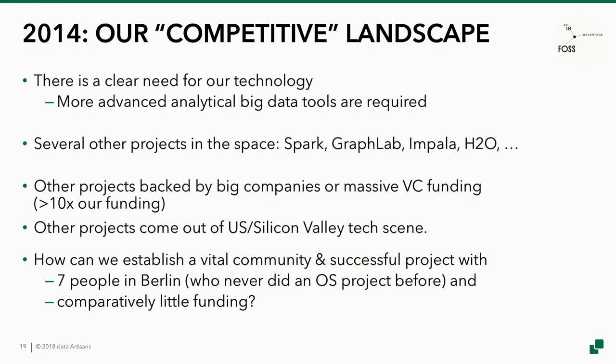So how did we grow a community? Back in 2014, the landscape of projects was kind of competitive — it still is. But we also saw that there was a clear need for the technology that the software was offering — a clear need for advanced big data analytics tools. There were lots of projects around, most prominently Apache Spark, and a couple of others. All of these projects were also backed by some kind of companies, either big companies or startups, with a lot more funding than we had. We were here in Berlin, where money is not as freely flowing as in other places. So we somehow had to compete with these projects for mind share.